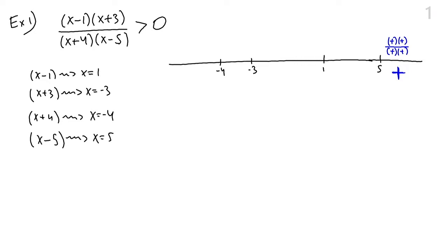Between one and five, the only term that starts to be negative is x minus five. The two terms in the numerator are still positive, but x minus five is now negative, so the product and quotient of all four factors is going to be negative. Between negative three and one, x minus five is still negative and now x minus one is also negative because we're below one, while the other terms remain positive. With two negatives total, we get a positive result.